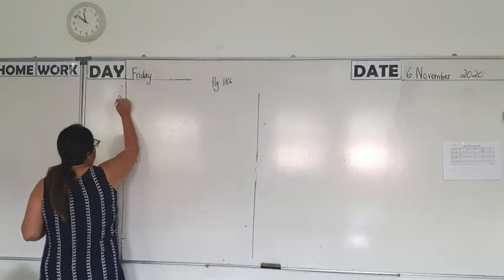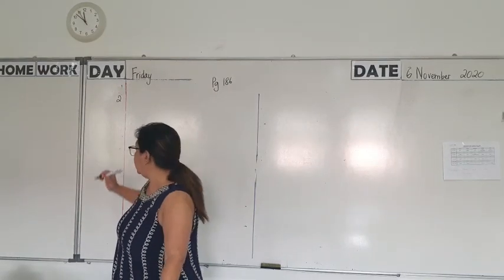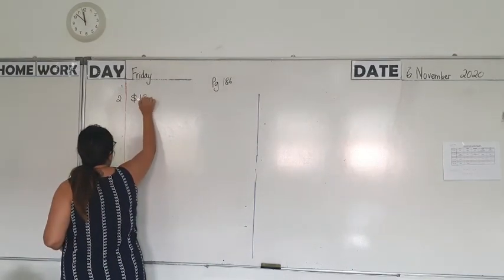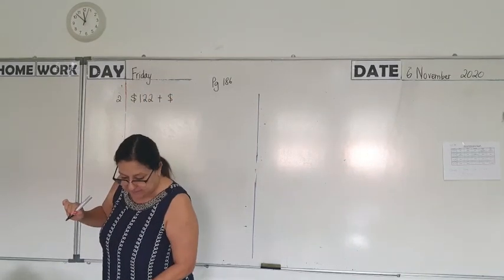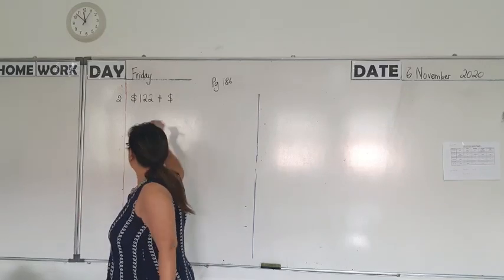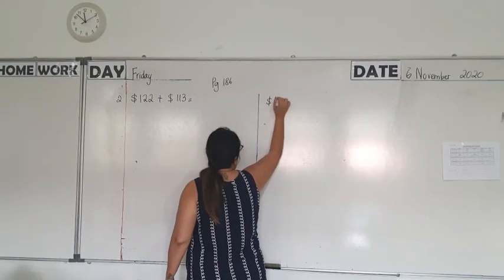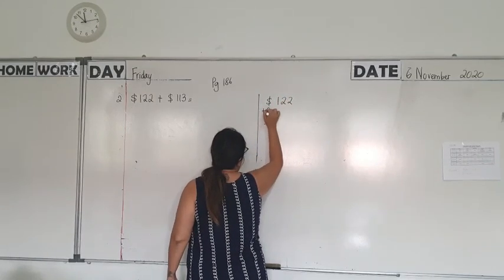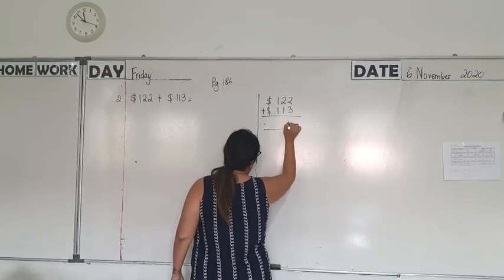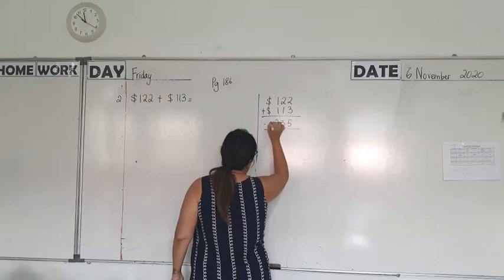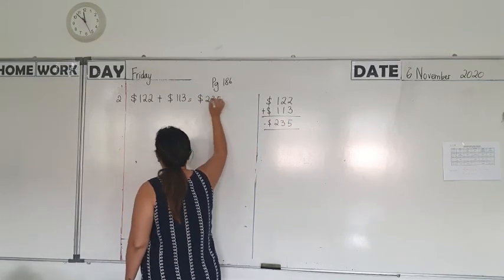So you have the boxes over there. You can write in the box. $122 plus $113 is equal to. So you can do the addition in the working column. Okay? So the answer is $235.